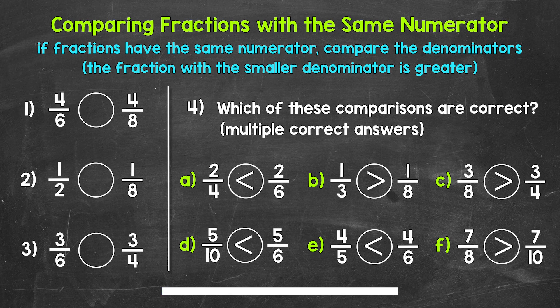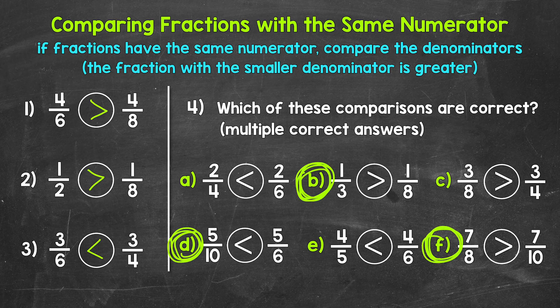Okay, so that's two minutes — let's go over the answers. For number one, you should have: four sixths is greater than four eighths. For number two: one half is greater than one eighth. For number three: three sixths is less than three fourths. And for number four, the correct answers are B — one third is greater than one eighth; D — five tenths is less than five sixths; and F — seven eighths is greater than seven tenths.